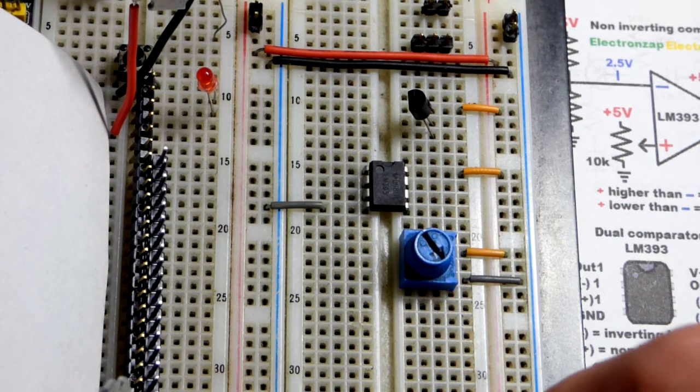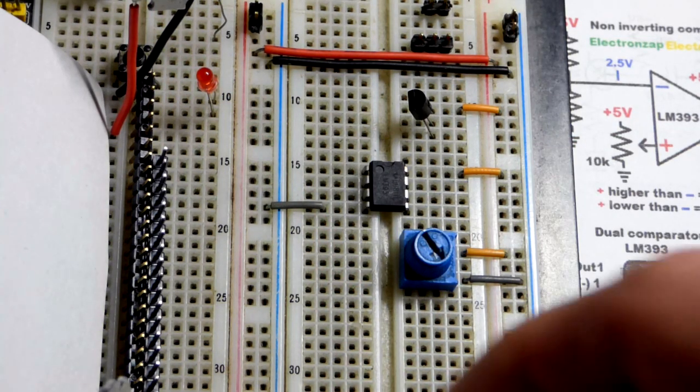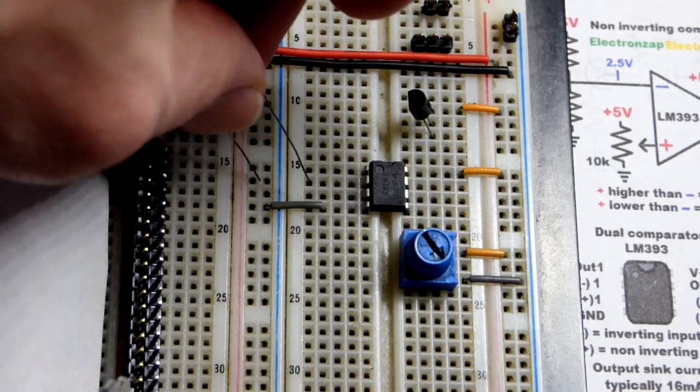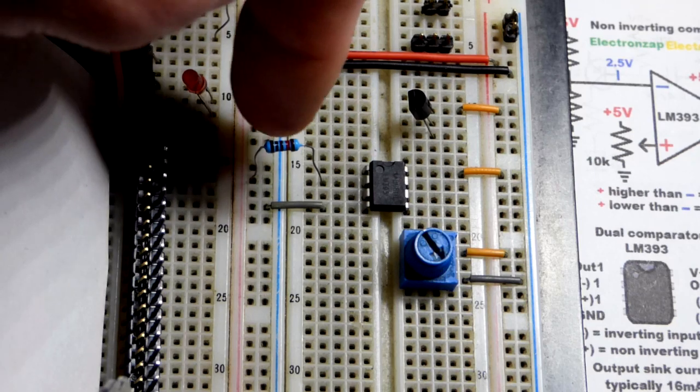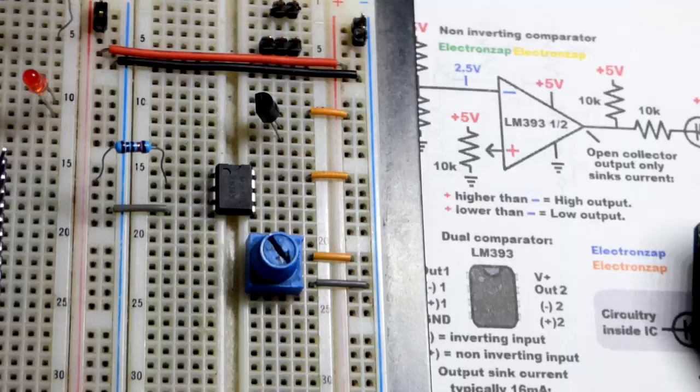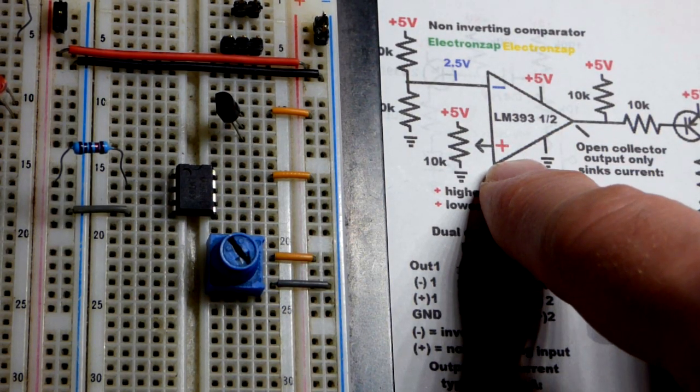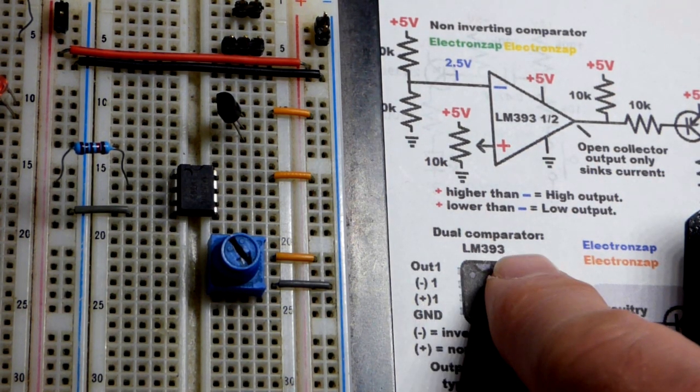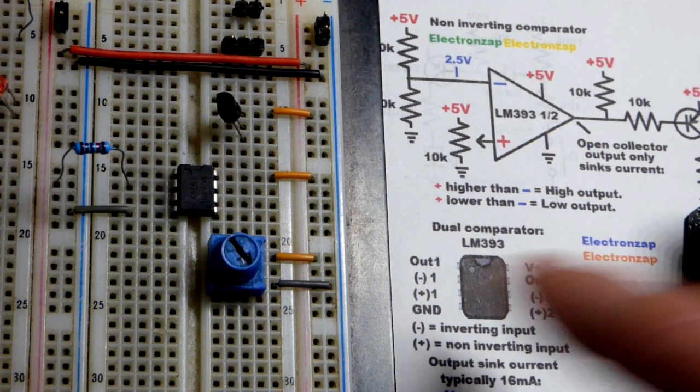We need 10,000 ohm resistors. And I got two of them down here, pretty sure they're 10,000. Yeah, 10,000 red. That's one reason why you get a little familiar with the color code, even if you don't memorize it. I could tell that was 10k because it's a red band. 100k would have been an orange band. So that goes to the inverting input.